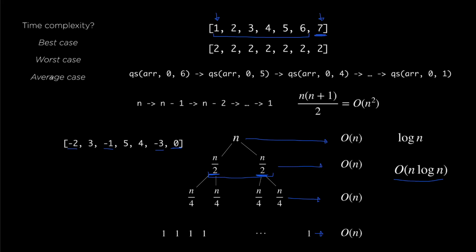As for the average case, it's more tricky to think about, but given a few assumptions — first, that there are no duplicates, and second, that the ordering of the array is random — we can actually show that the average case time complexity is also O(n log n). I'll put a link to the reference book in the description below if you're curious about the proof.